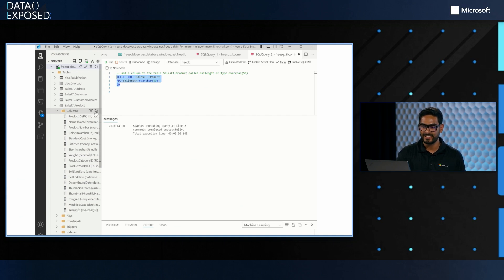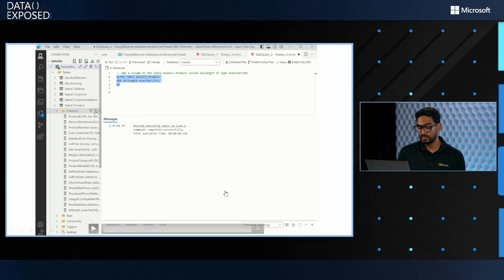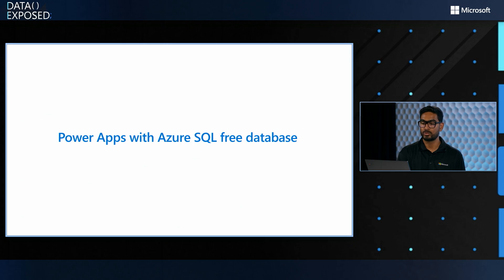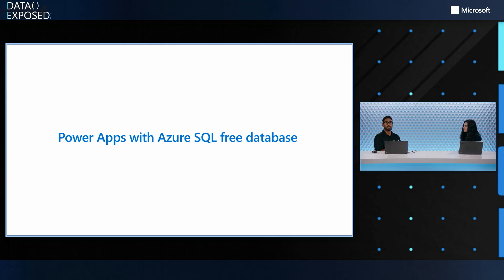I've added the ski length and refreshed my columns for the sample table. At the bottom I can see the ski length gets added. With Azure Data Studio I can add any sort of structure with this free database. Now I want to build on this scenario — in my cycle shop I want to add inventory management. I've added the ski as a new product, and I want to understand how my inventory is varying with time, so I want to build an application on top of it.